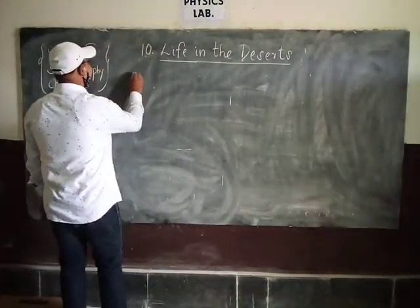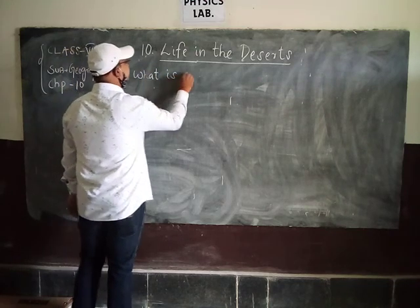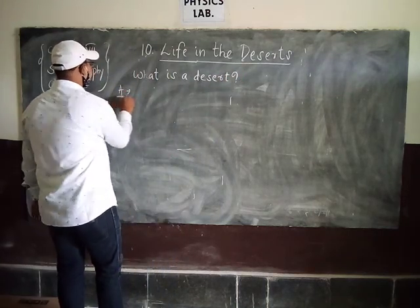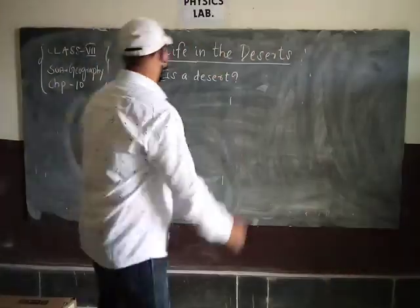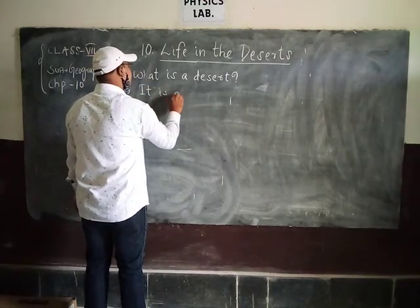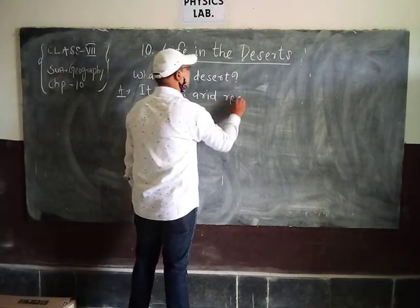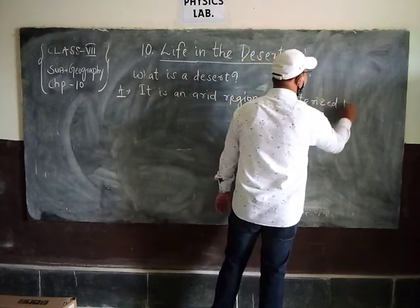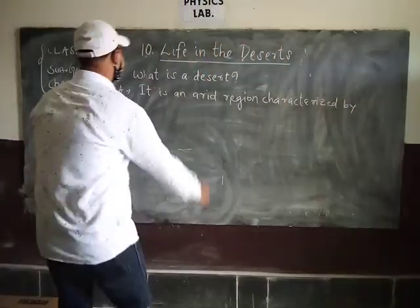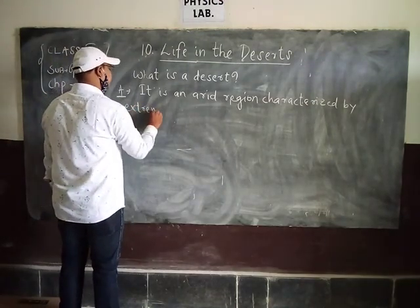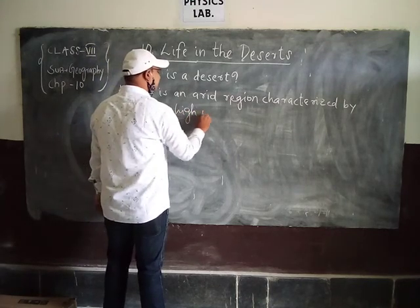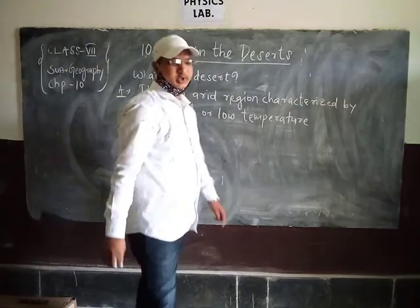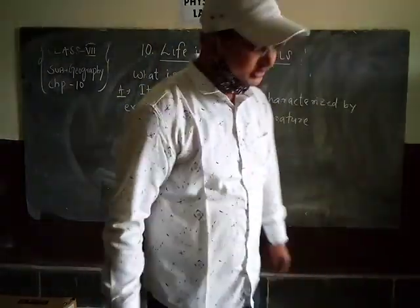The first question is: what is a desert? It is an arid region characterized by extremely high or low temperature.